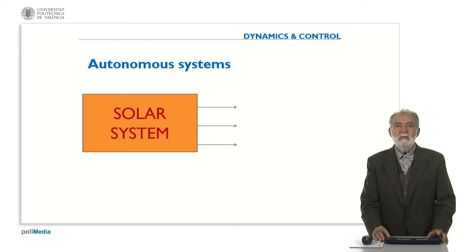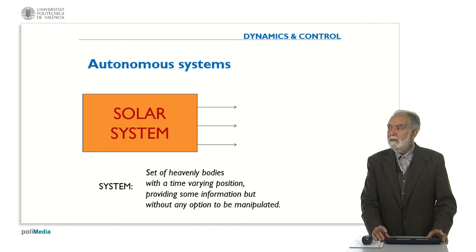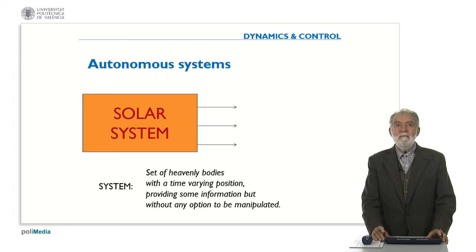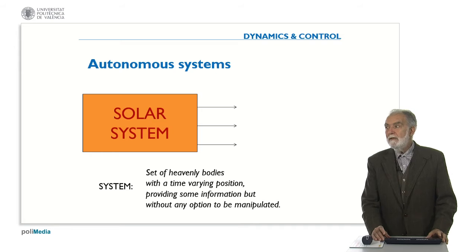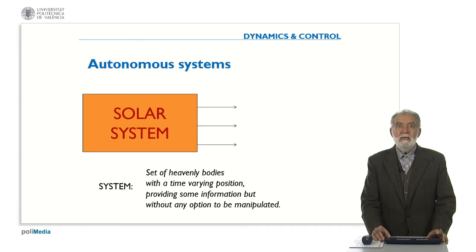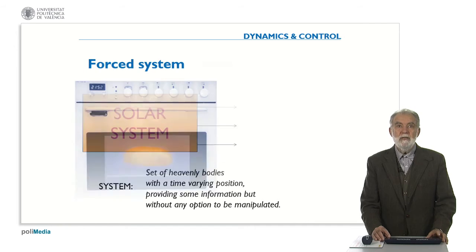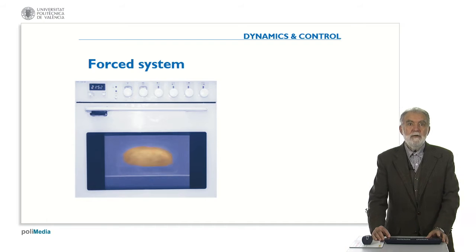For instance, there are some systems that we will call autonomous systems, like the solar system. In this case, the system is a set of heavenly bodies with a time-varying position. We can access this position and they provide some information, but of course there is no option to manipulate the solar system. So, in this case, without manipulated inputs, we say that this is an autonomous system.